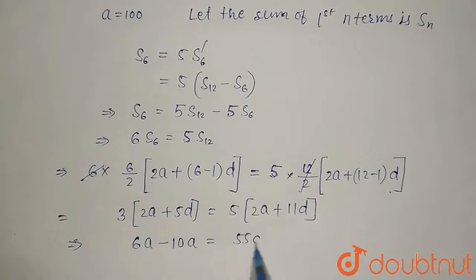So 6a minus 10a equals 55d minus 15d, that is, -4a equals 40d.